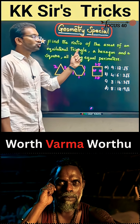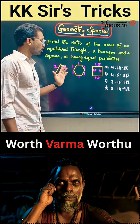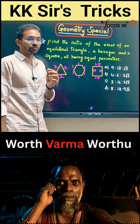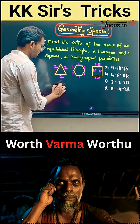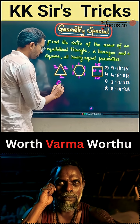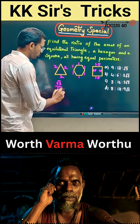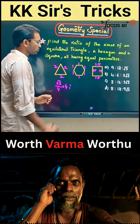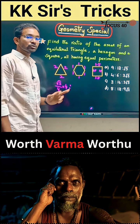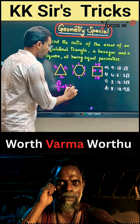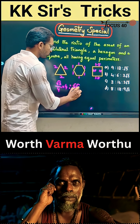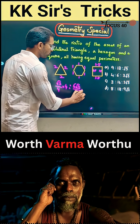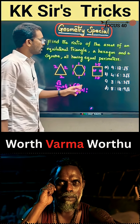Now calculating the ratio of areas of all three figures. The area of an equilateral triangle is (√3/4) × a², so with side 2: (√3/4) × 4. The area of a regular hexagon is (6√3/4) × a², so with side 1: (6√3/4) × 1.